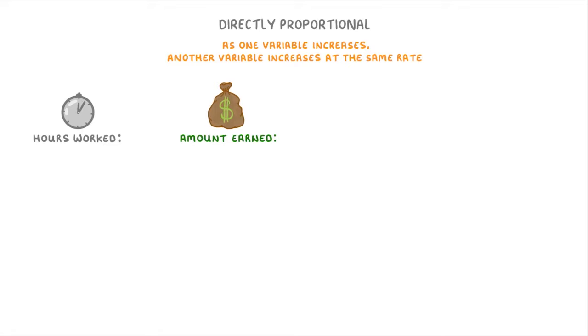As long as you were being paid the same amount each hour, then these two variables or values can be considered directly proportional, which we can show by putting this proportional symbol between hours worked and amount earned.